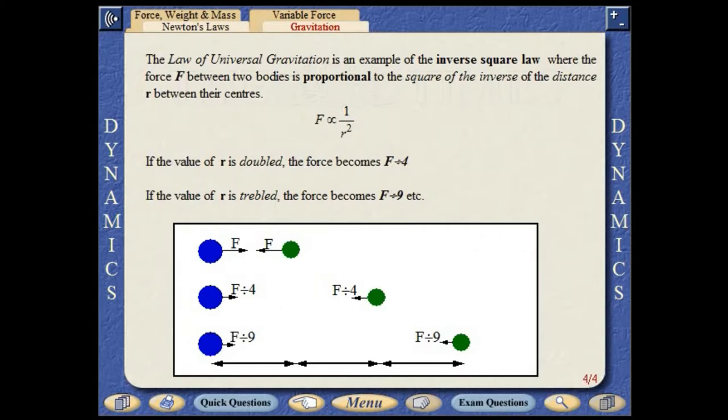The law of universal gravitation is an example of the inverse square law, where the force between two bodies is proportional to the square of the inverse of the distance between their centres. If the distance is doubled, the force reduces by a factor of four.